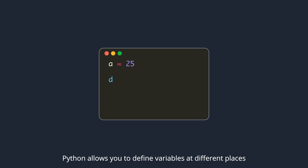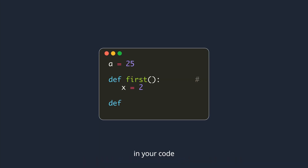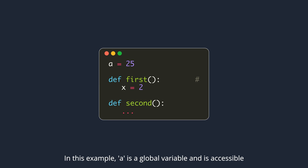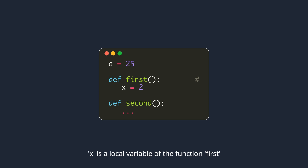Python allows you to define variables at different places in your code. In this example, a is a global variable and is accessible from within both functions. x is a local variable of the function 'first' and is not accessible outside the function.